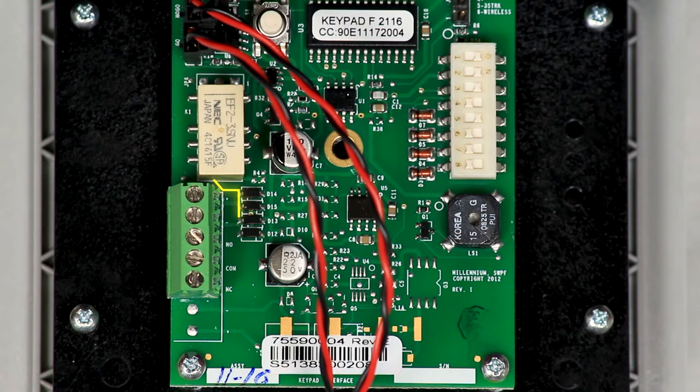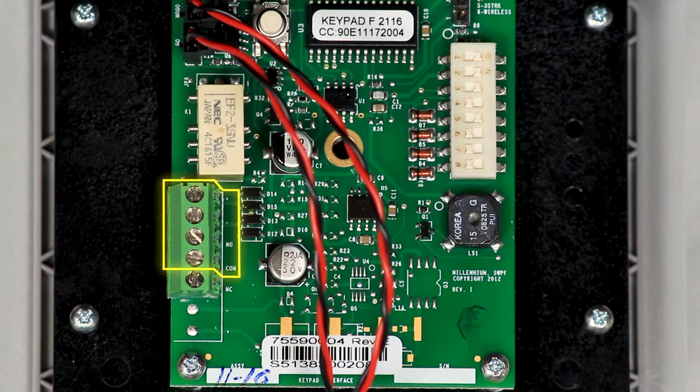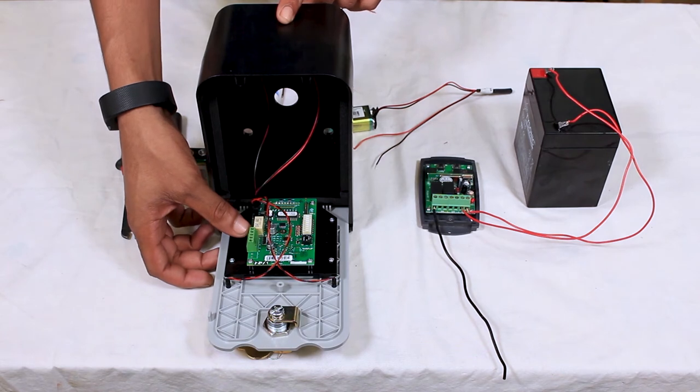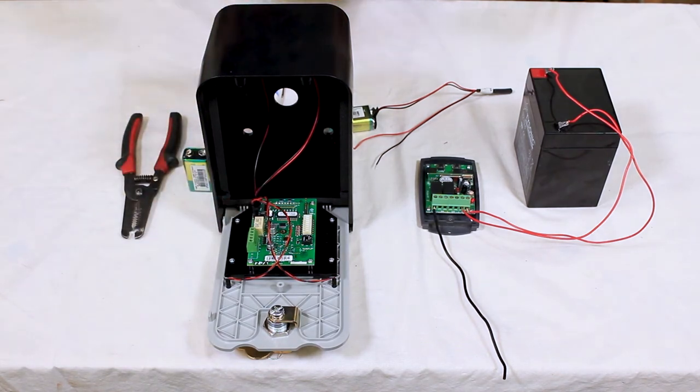We're only going to be using the incoming power and the normally open and the common. Now the first terminal, the input, can take anywhere from 7 all the way up to 24 volts DC. I'm just going to use 9 volts.